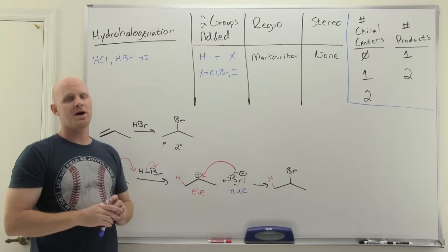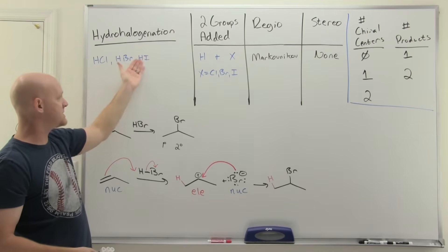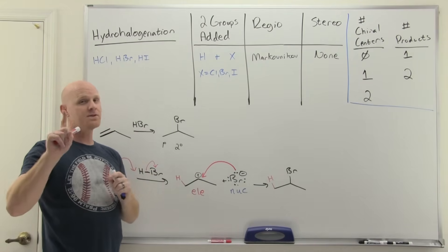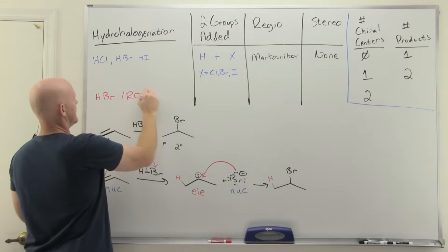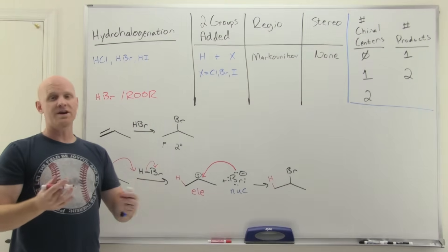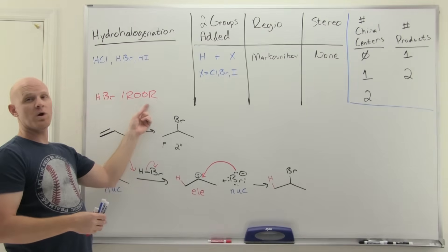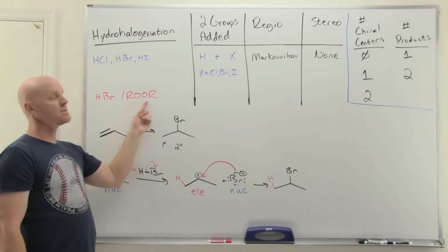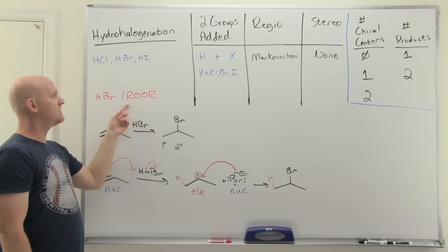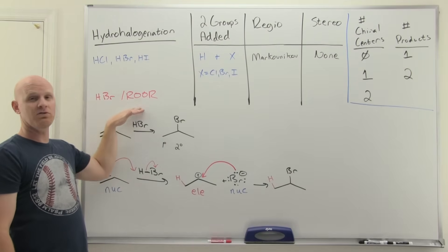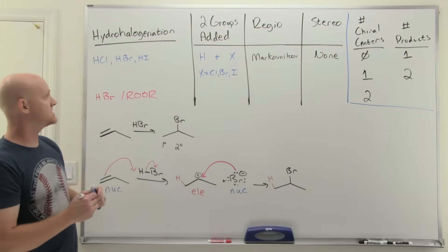There is a second option with hydrohalogenation. HCl, HBr, and HI all work the same way as described, but specifically for HBr only, you have another option: you can mix HBr with a peroxide (ROOR). Those R groups could be hydrogen — giving hydrogen peroxide, H₂O₂ — or more commonly an organic peroxide like methyl groups or benzene rings. Often you'll just see it written generically as ROOR.